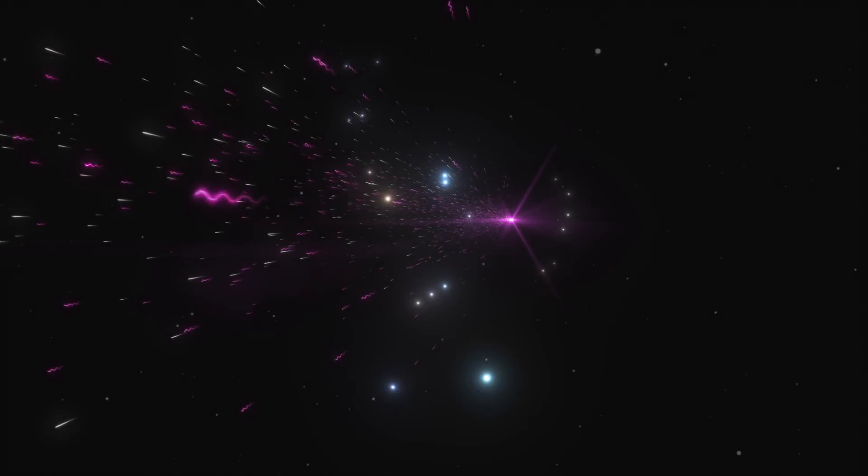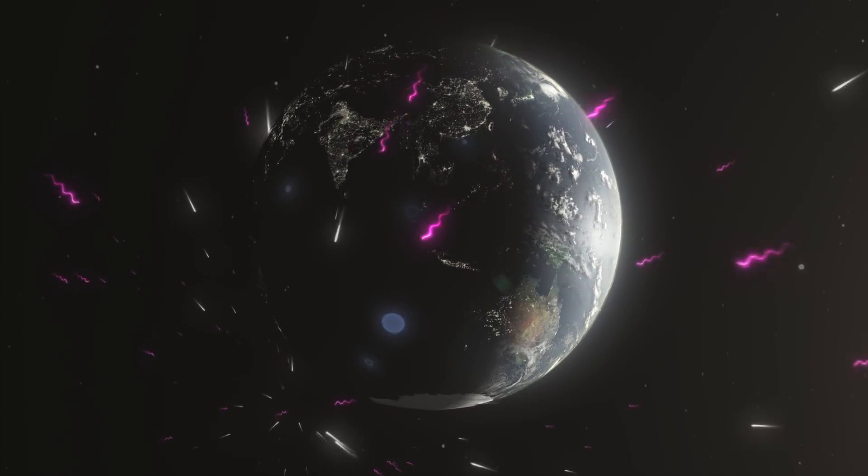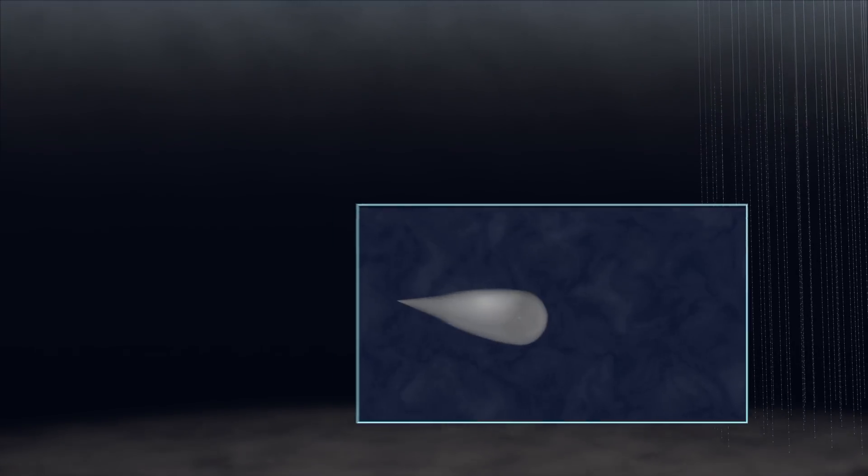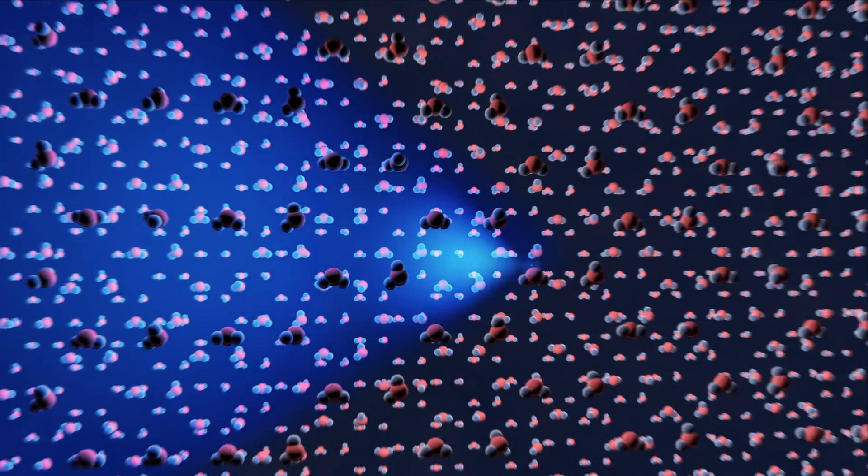3.7 billion years later, they reached Earth. On September 22, 2017, a single high-energy neutrino struck an atom in a water molecule in the Antarctic ice. The crash produced a particle called a muon. It raced through the ice so fast it emitted a faint blue glow.